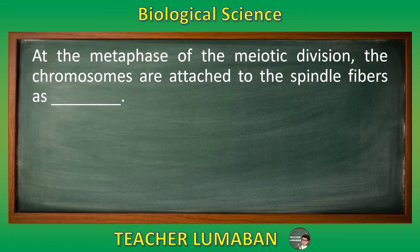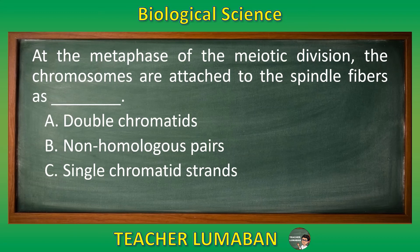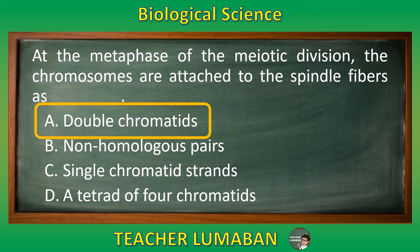At the metaphase of the meiotic division, the chromosomes are attached to the spindle fiber as blank. Letter A: double chromatids. Letter B: non-homologous pairs. Letter C: single chromatid strands. Letter D: a tetrad of four chromatids. Choose the suitable answer based on the given choices in 5 seconds. 5, 4, 3, 2, 1. The correct answer is Letter A, double chromatids. At the metaphase of the meiotic division, the chromosomes are attached to the spindle fibers as double chromatids.